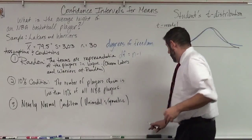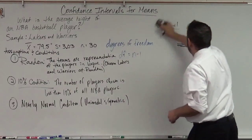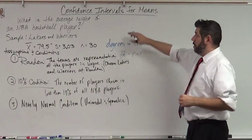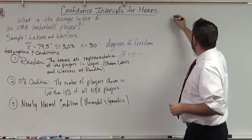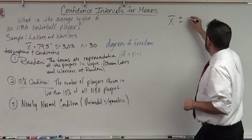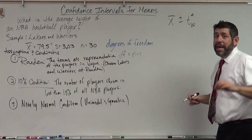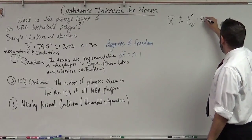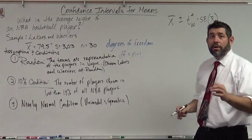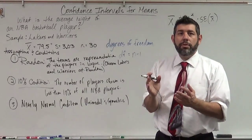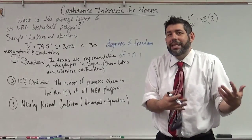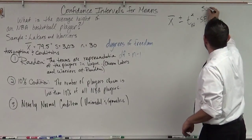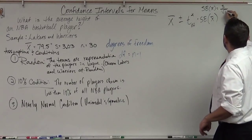Here is our formula for the confidence interval for one sample mean. It looks like this: x-bar plus or minus t-star — depending on your degrees of freedom — times the standard error of x-bar. The standard error of x-bar is not sigma over square root of n because we don't know sigma. So we're going to use our sample standard deviation: the standard error of x-bar equals s over the square root of n.